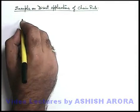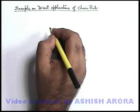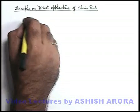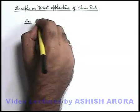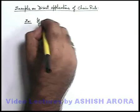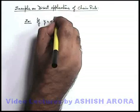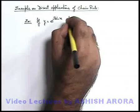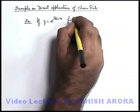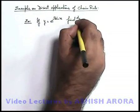Let us take some more examples on direct applications of the chain rule. For example, if y is equal to e to the power sine x, we are required to find dy/dx.